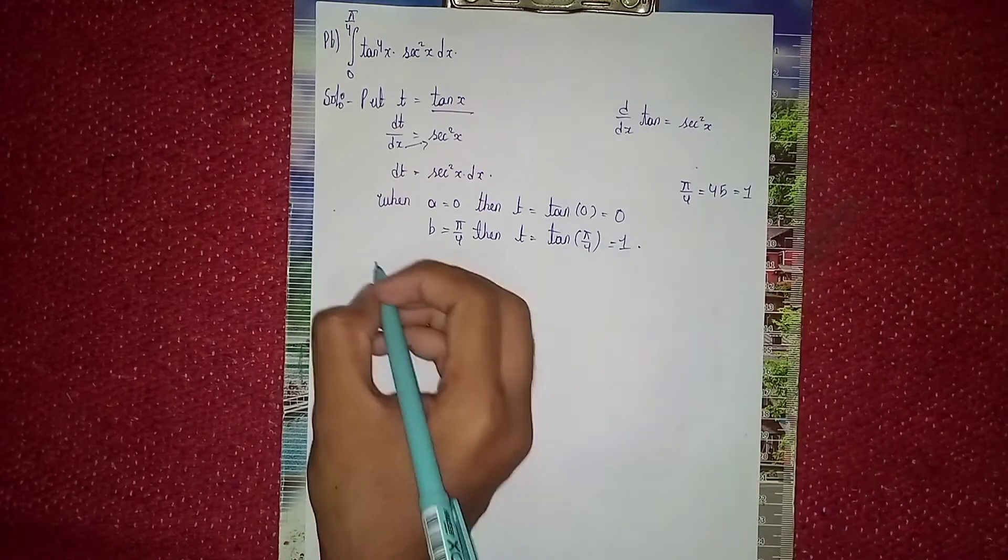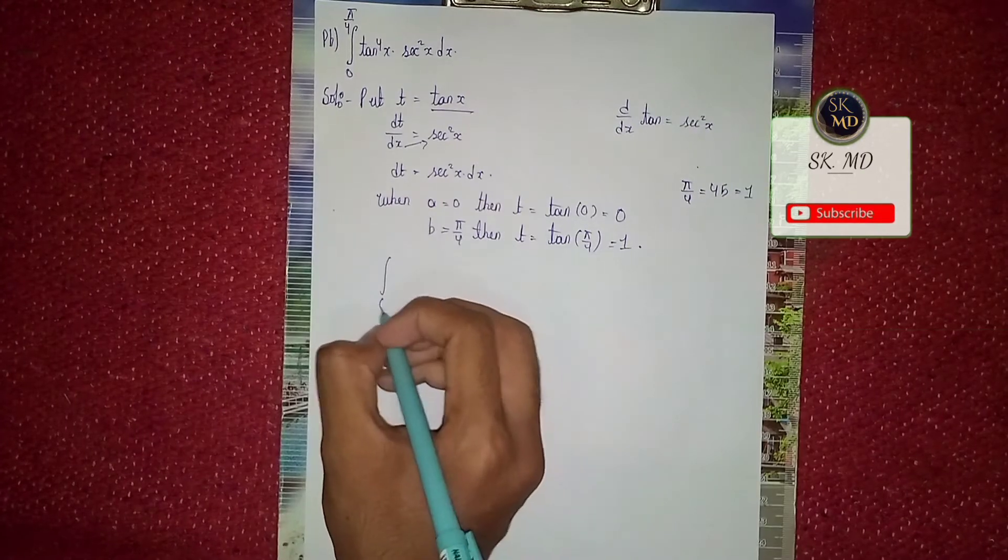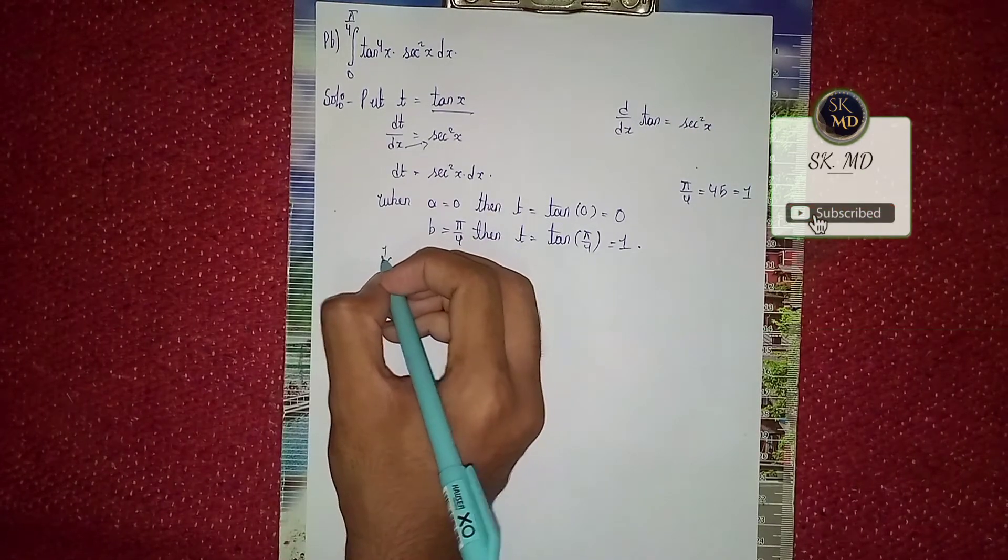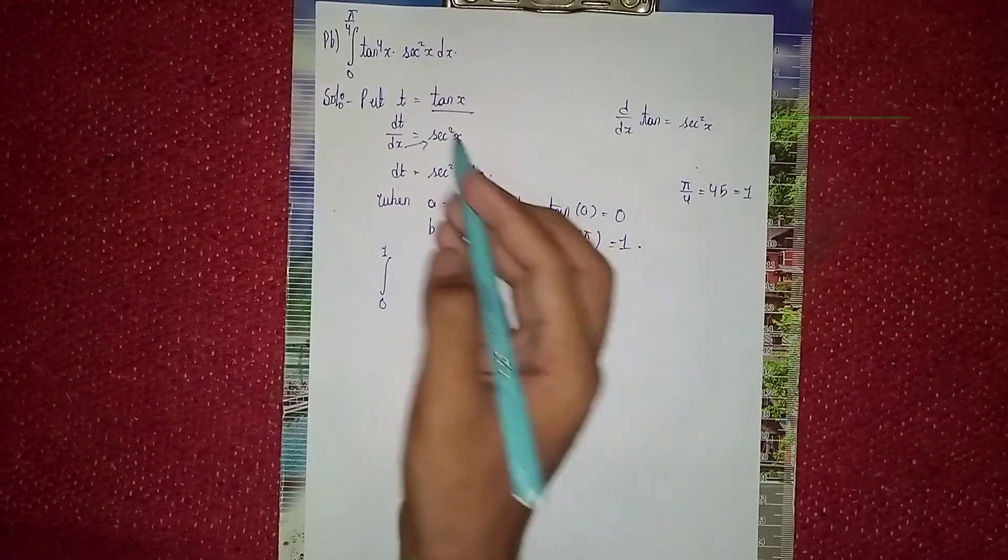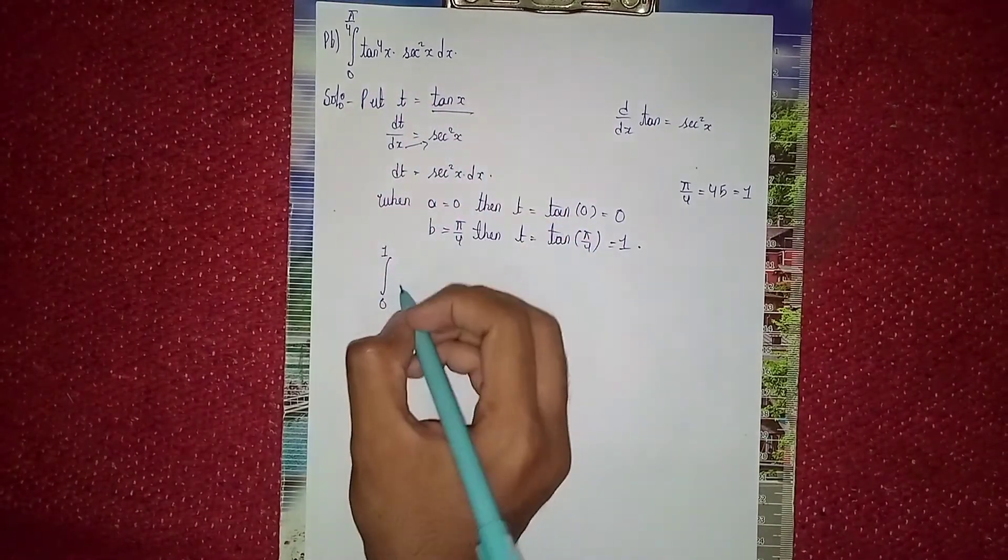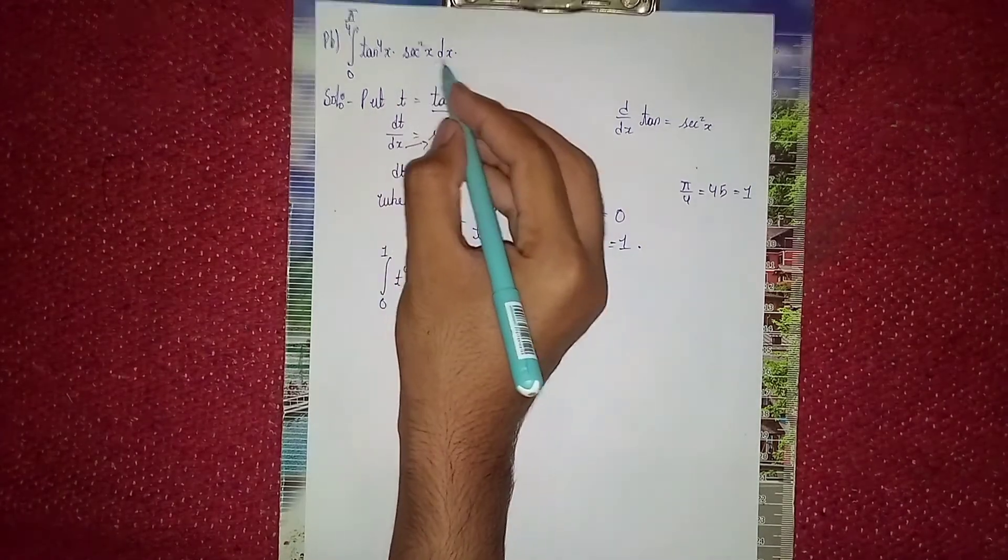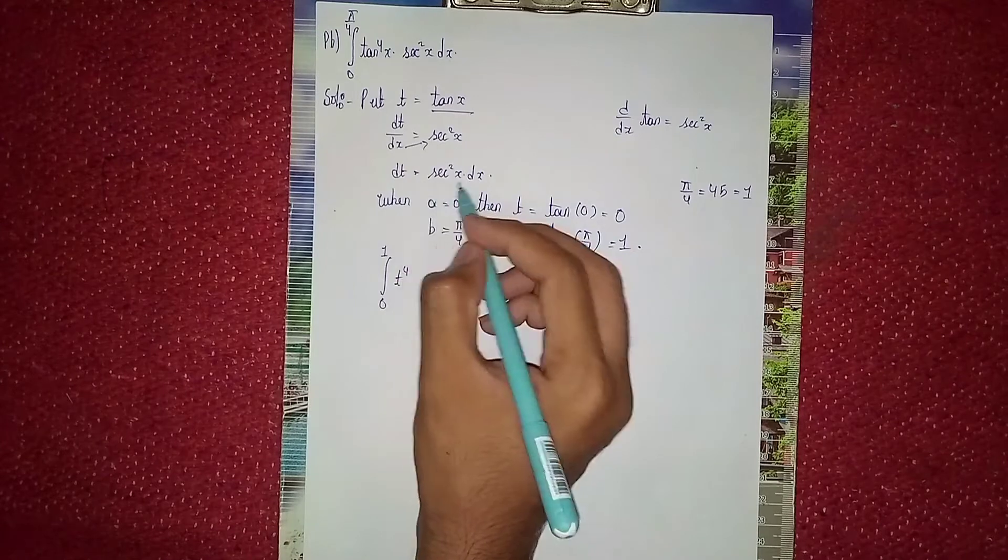Now take the question with new limits: lower limit is 0 and upper limit is 1. We take tan(x) as t, so t to the power 4, then sec^2(x) dx.